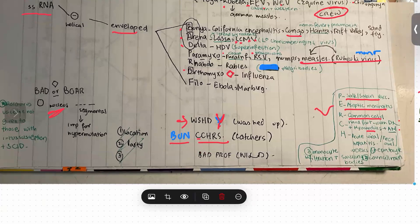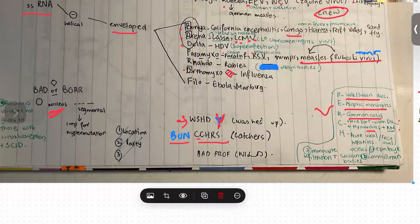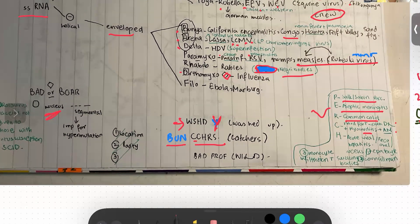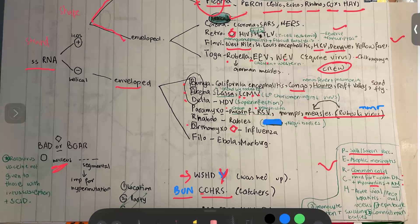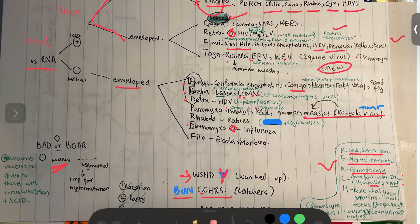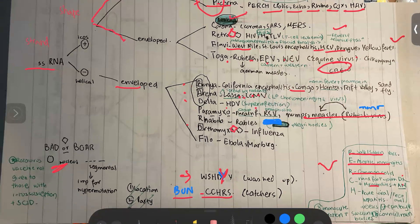Moving on to Rhabdoviruses — it causes Rabies. You have to remember the bullet shape — it's related to the shape of the Rhabdovirus plus Negri bodies. Orthomyxoviruses replicate in the nucleus as shown by the diamond, and they cause Influenza. The Filo virus causes Ebola and Marburg. So here we are done with the reading of this chart.